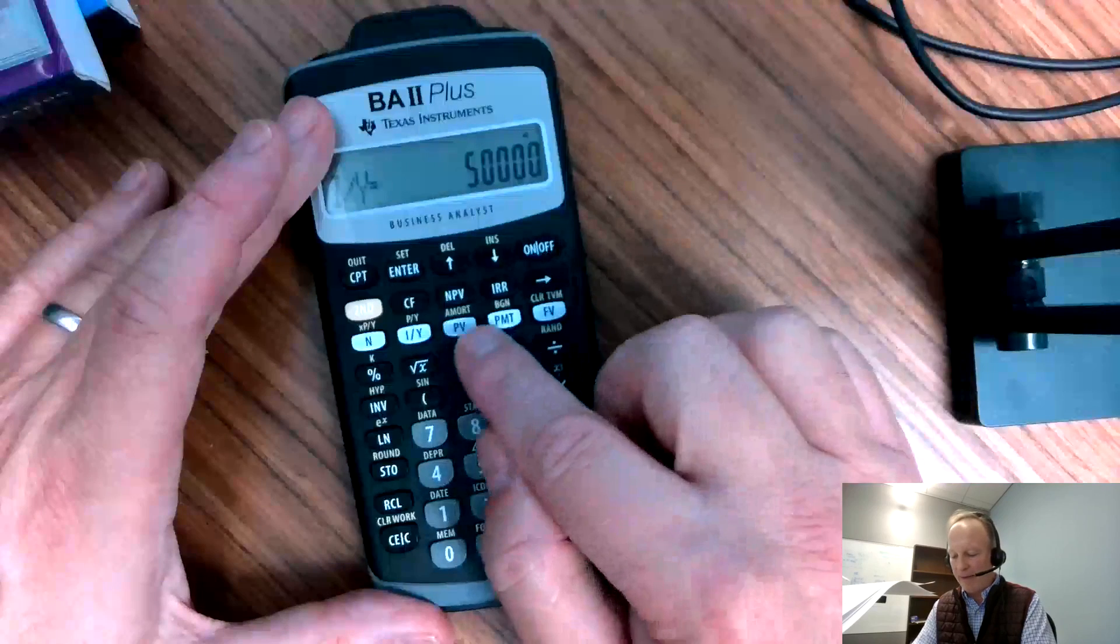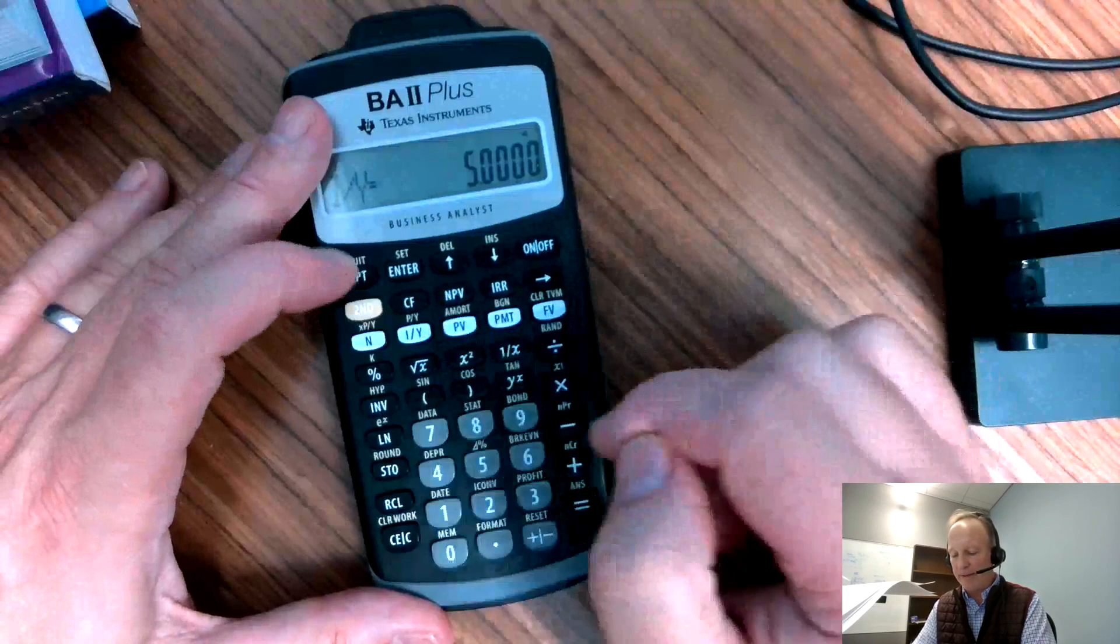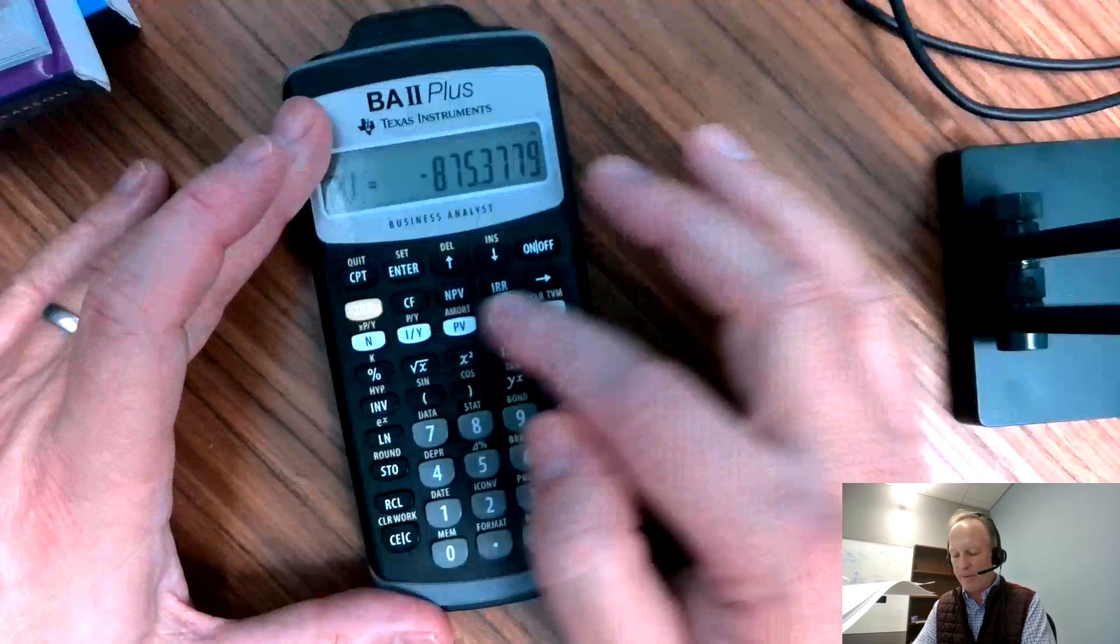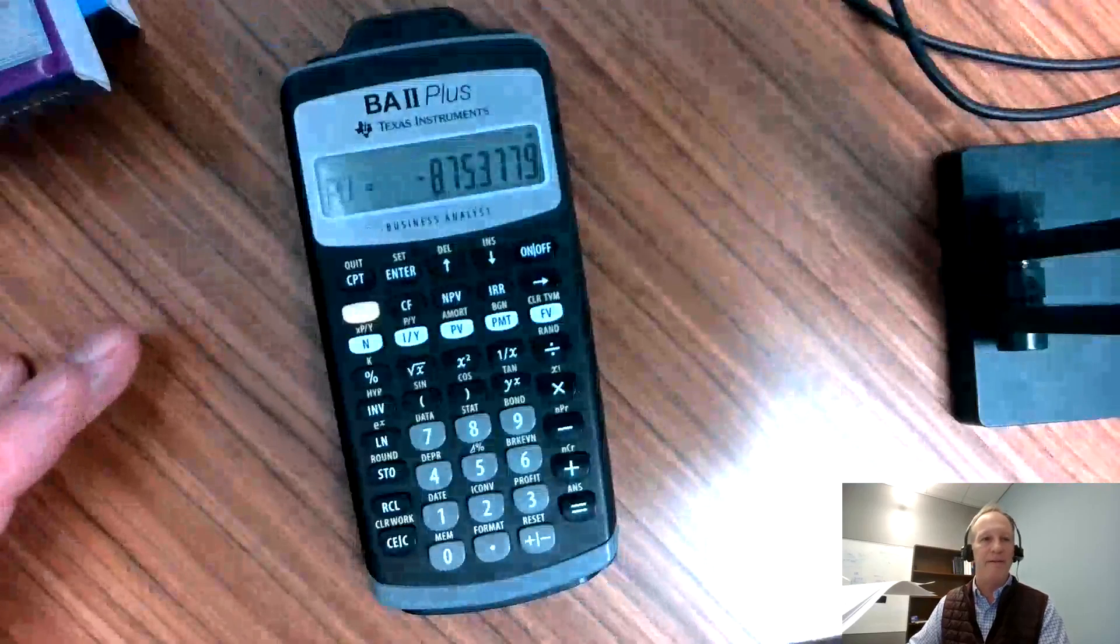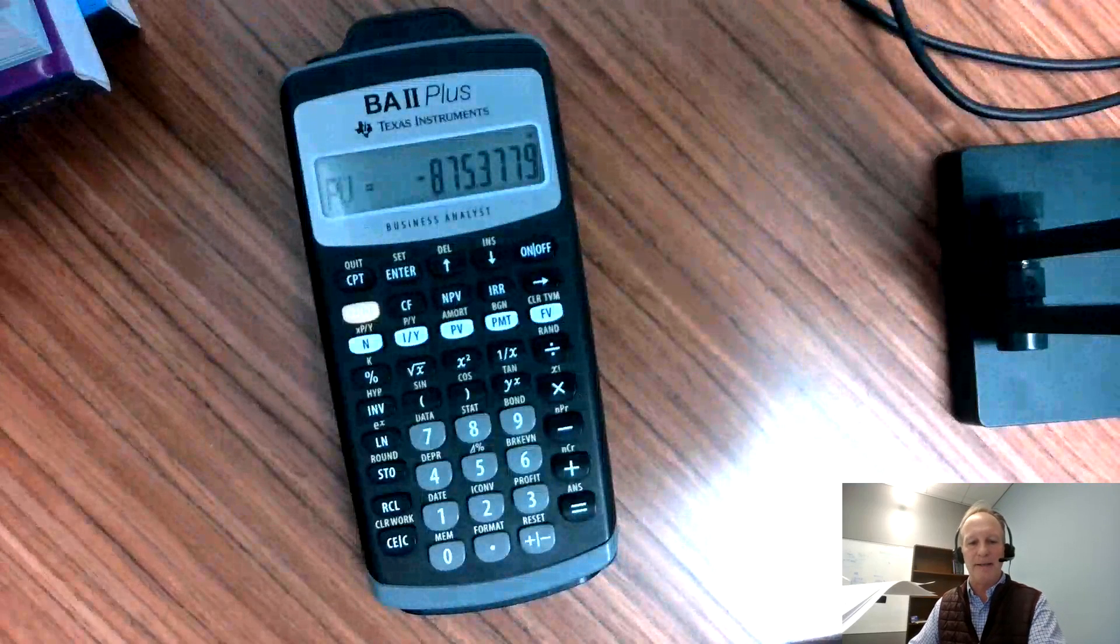The only thing I haven't hit is present value, so now I'm going to hit the CPT button, compute, present value. And it gives me this number, minus 875. So why does it say minus 875?